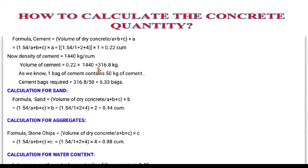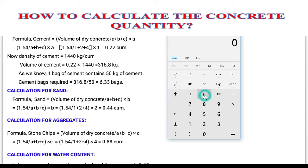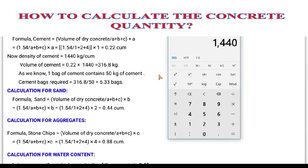The density of cement is 1440 kg per cubic meter. To calculate the weight of cement in kg, we multiply the volume of cement by the density: 0.22 × 1440 = 316.8 kg. On the calculator: 0.22 multiplied by 1440 gives us 316.8 kg.